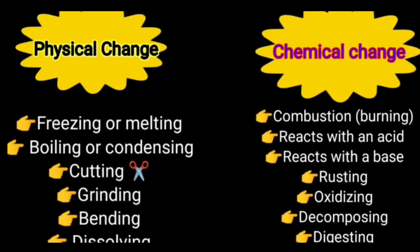What is physical and chemical change? Freezing or melting of a solid substance is a physical change. Boiling, condensing, cutting, grinding, bending, and dissolving are also physical changes. In chemical changes we see combustion (burning), reaction with an acid, reaction with a base, rusting, oxidizing, decomposing, or digesting.